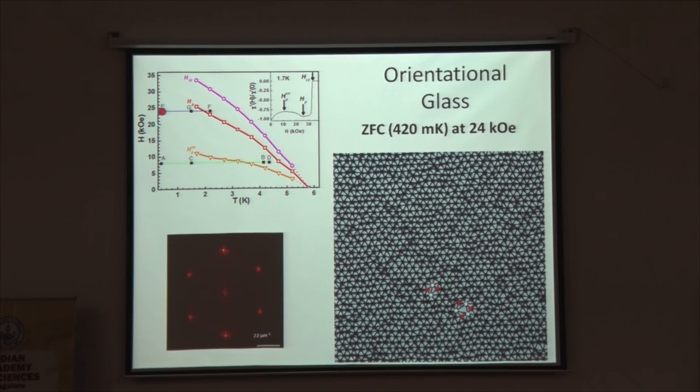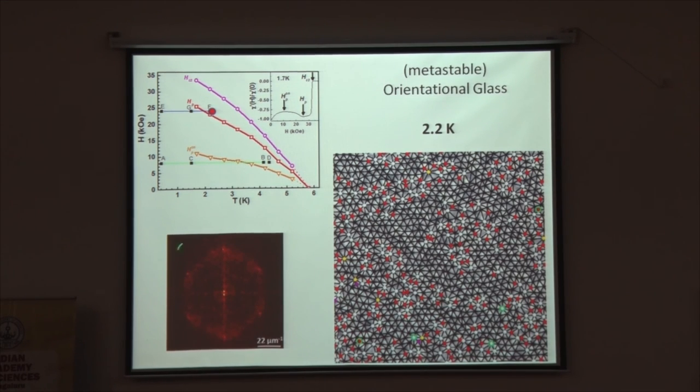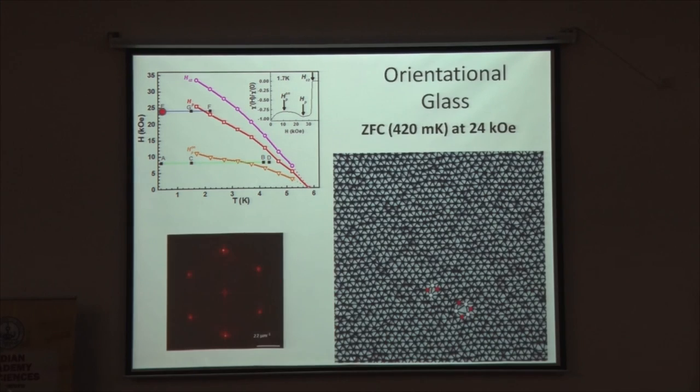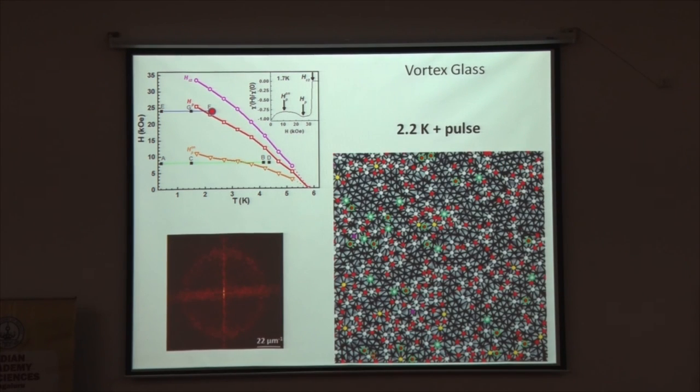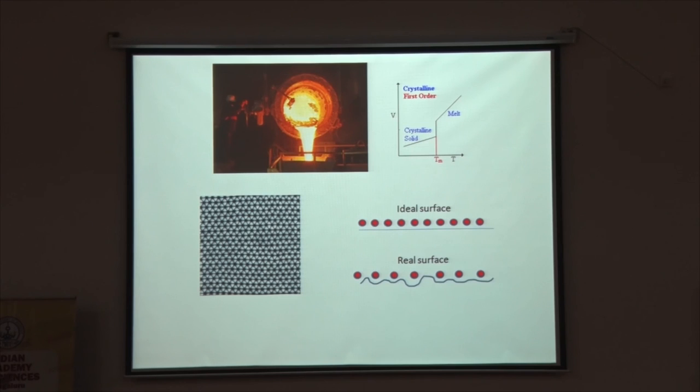The same sequence happens here. You have here—now you are already in the orientational glass state. So you have dislocations. You hit it here. You can still see the six-fold symmetry remaining. But as soon as you shake it, it becomes a circle. So there is no orientational order left. Similarly, you can also do the supercooling experiment here.